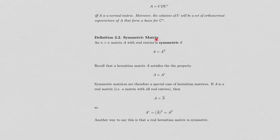A symmetric matrix is defined as an n-by-n matrix with real entries satisfying A = Aᵀ. Recall that a Hermitian matrix satisfies A = A*. If A is a real matrix, then the adjoint of A equals its transpose, so a symmetric matrix is simply a real Hermitian matrix.